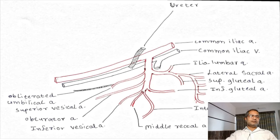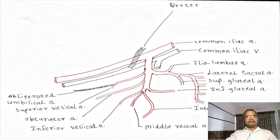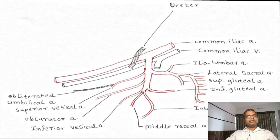First is the obliterated umbilical artery. The umbilical artery is present in fetal life — during intrauterine life — and it carries deoxygenated blood in the fetus. After birth, the terminal part of the umbilical artery gets obliterated, and it is known as the obliterated part of the umbilical artery, which is the terminal or distal part. The proximal part of this umbilical artery persists as the superior vesical artery in both male and female. This superior vesical artery supplies the superior surface of the urinary bladder, also the terminal part of the ureter, and part of the vas deferens or ductus deferens.